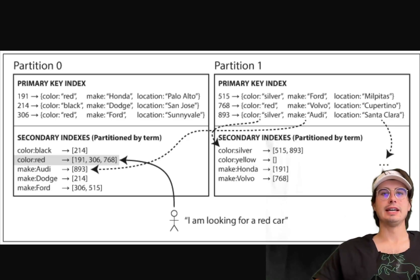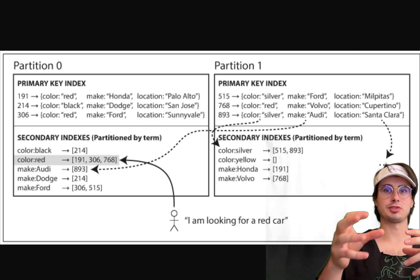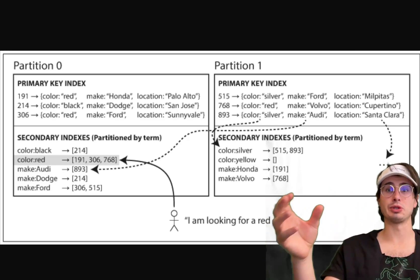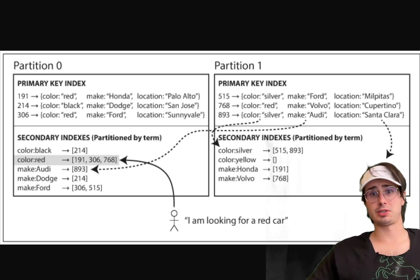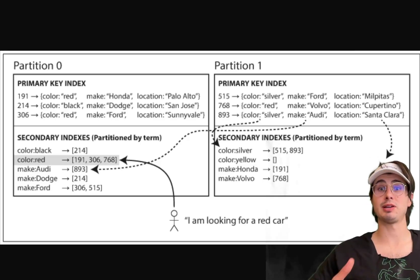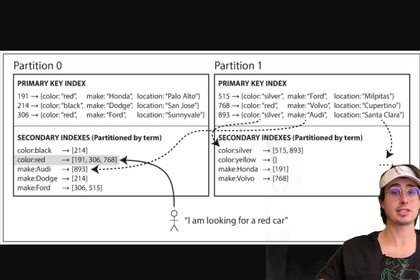Another way you can partition secondary index is by document. Partitioning secondary indexes by document involves storing the index entries within the same partition as the document they reference. This approach ensures that index lookups and document retrieval can be performed locally within the same partition so you don't have cross-partition queries and you can improve performance by reducing the amount of routes and different steps that the database needs to take to actually get your data.